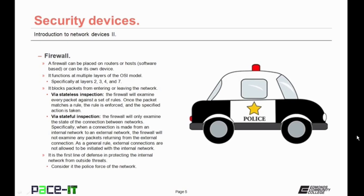First up is the firewall. A firewall can be placed on routers or hosts — it can be software-based, or it can be its own device. A firewall functions at multiple layers of the OSI model, specifically at layers two, three, four, and seven. A firewall can block packets from entering or leaving the network, and it does this through one of two methods.